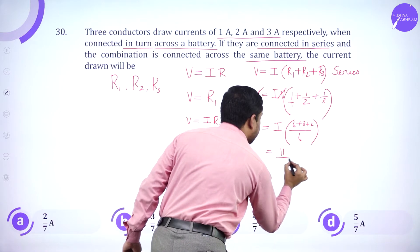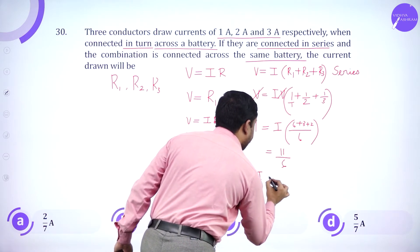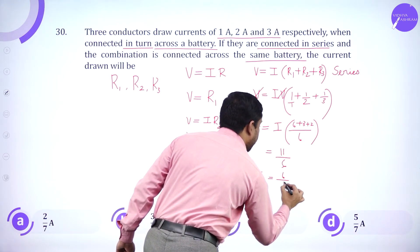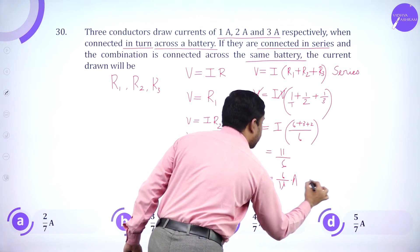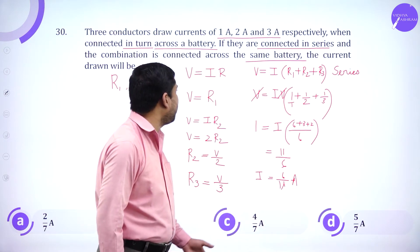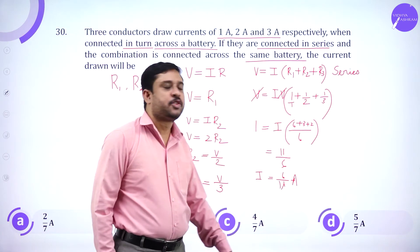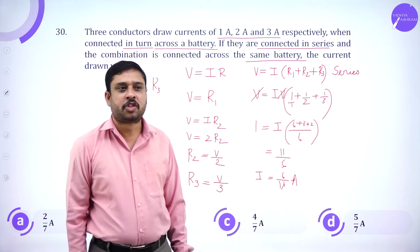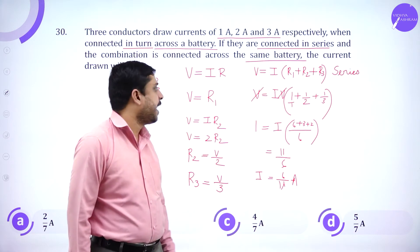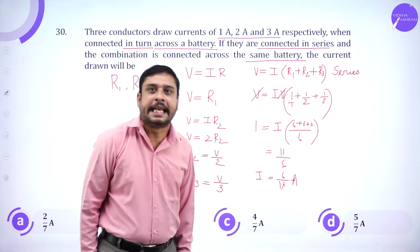So this V gets cancelled, 1 equals I, 6 plus 3 plus 2, so 11 by 6 or I equals 6 by 11 ampere. So very clearly you see this answer does not match with any of the given options. Therefore, we say it is given grace marks.